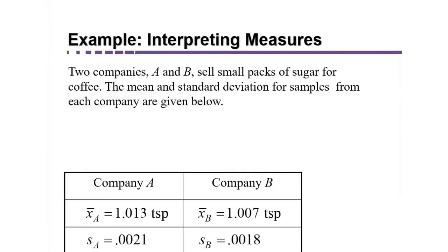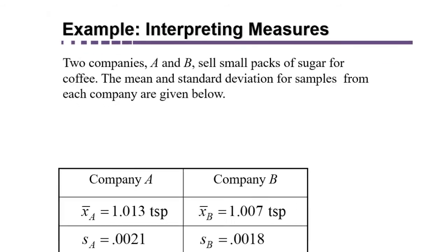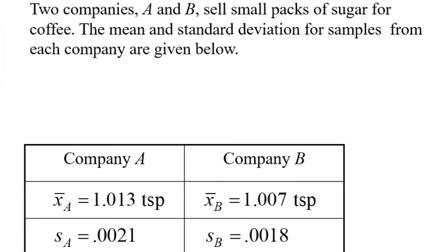Here we are going to compare two companies, A and B, that sell small packs of sugar for coffee. The mean and standard deviation for samples from each company are given below. We went to each factory, picked out some samples, and calculated the mean and standard deviation of the amount of sugar in each of the packets.